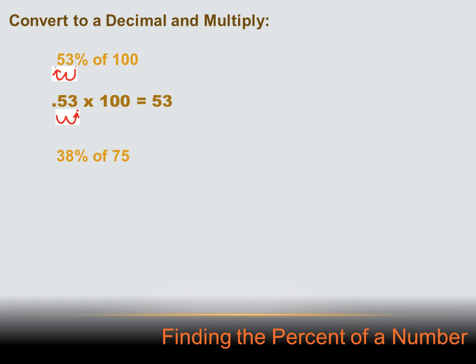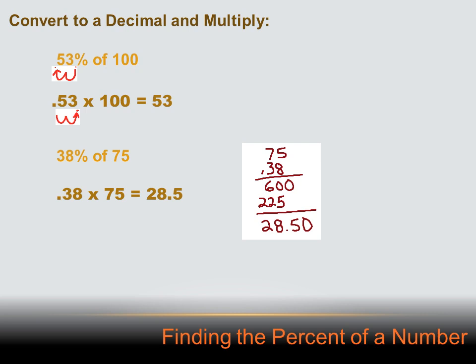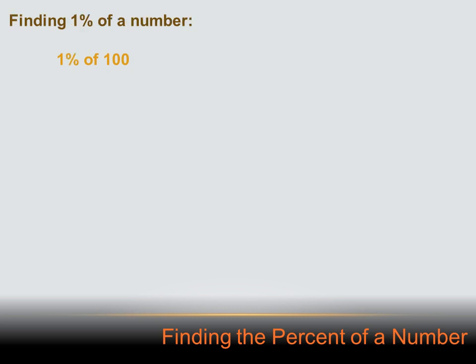Let's try one a little bit harder: 38% of 75. The first thing I need to do is convert 38% to a decimal. I move the decimal place 2 to the left and it becomes 0.38. So now 0.38 times 75 equals 28.5. All you've got to do is set up a multiplication problem and multiply 0.38 times 75 and you get 28.5. That'll always work — you convert the percentage into a decimal and then multiply it times the number.